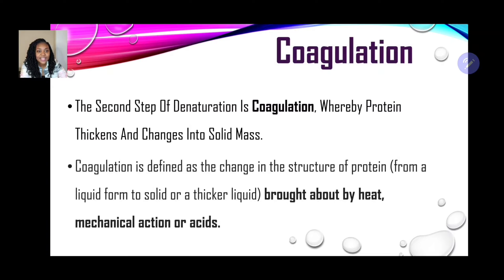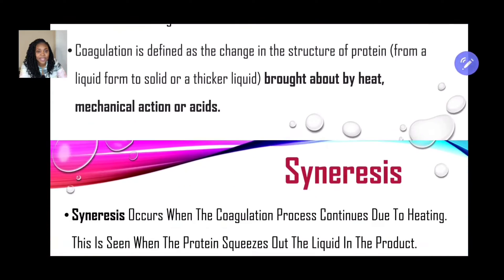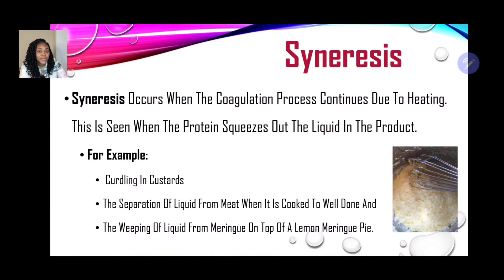The next key term is coagulation — the second step after denaturation. For example with eggs, coagulation is where the protein thickens and changes into a solid mass. It is defined as a change in the structure of protein from a liquid form to a solid or thicker liquid, brought about by heat, mechanical action, or acid. For instance when poaching eggs, vinegar may be added to speed up coagulation.